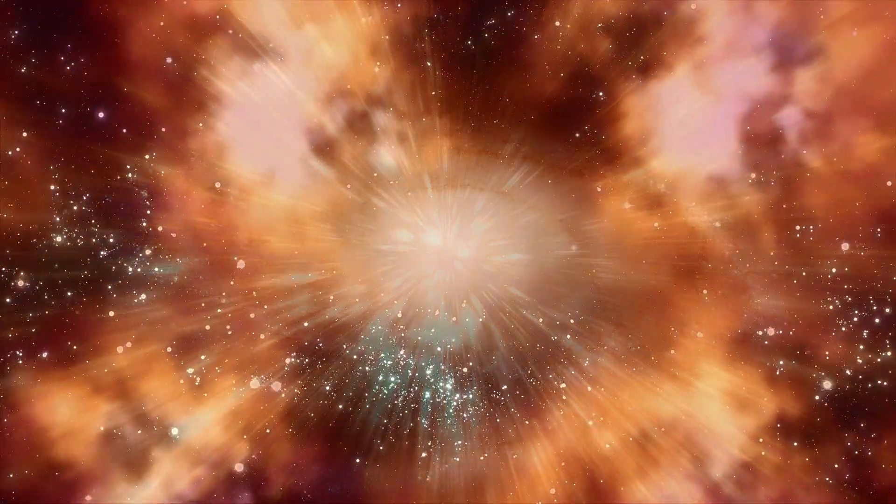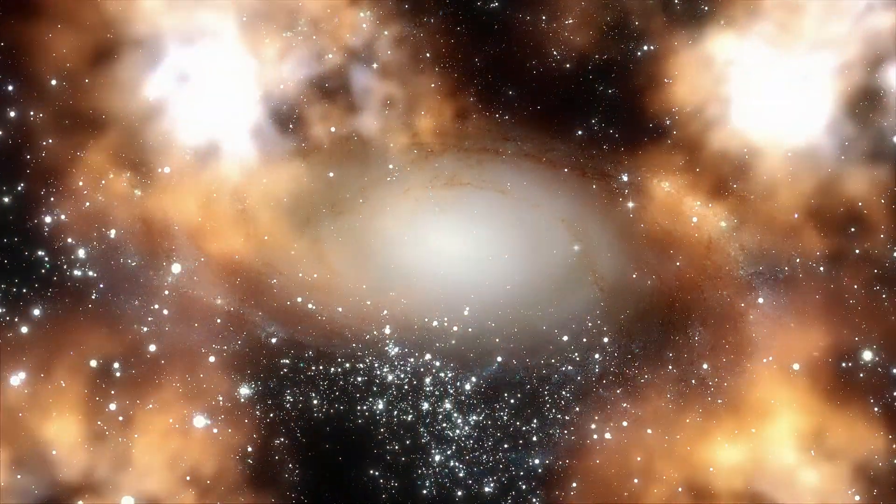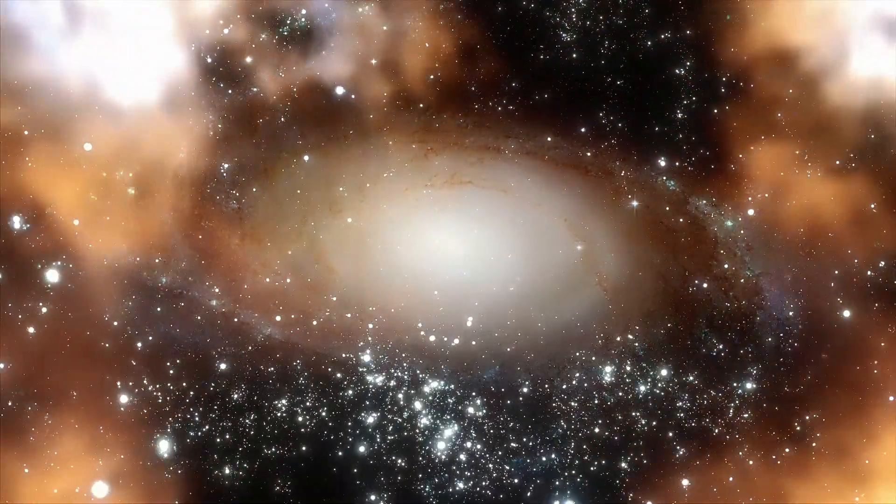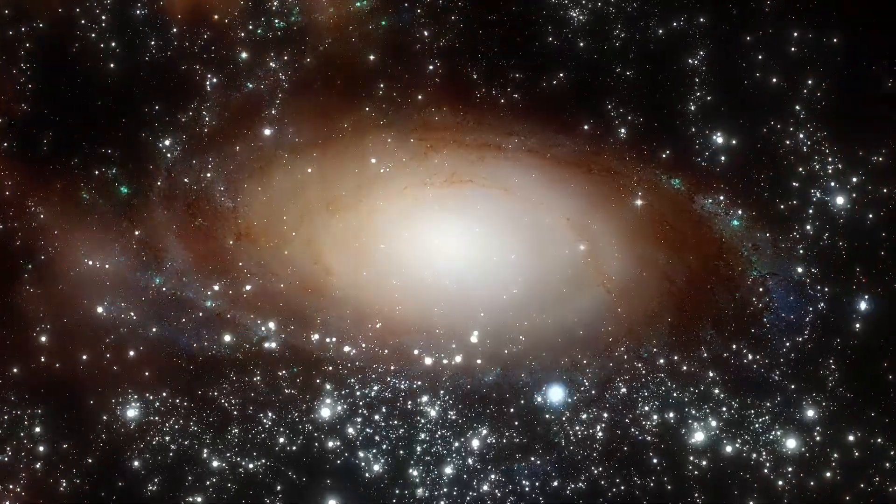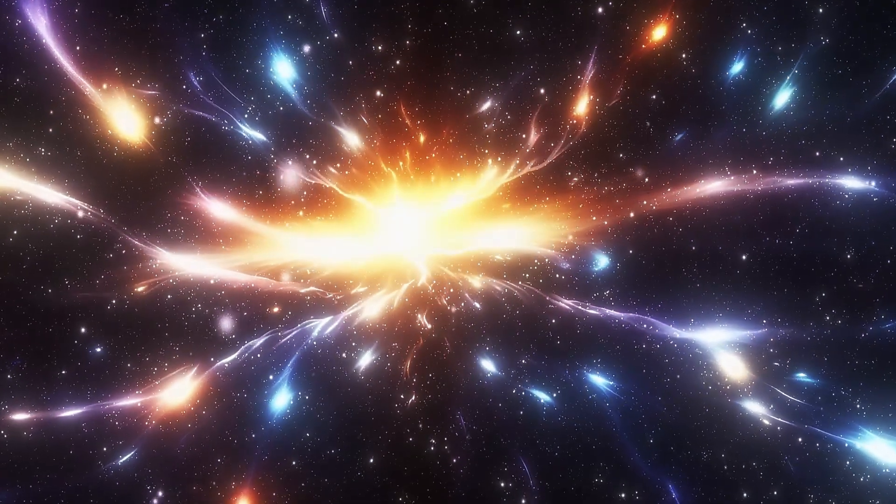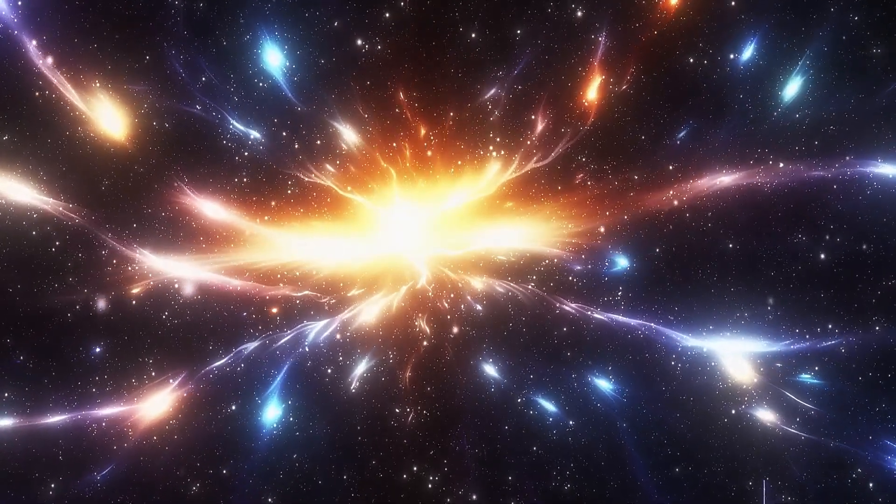In the 1930s, Einstein suggested that the universe could go through an infinite cycle of Big Bangs and Big Crunches. The expansion of our universe could have been caused by the collapse of a previous universe, effectively bouncing back from the contraction of the universe before it.